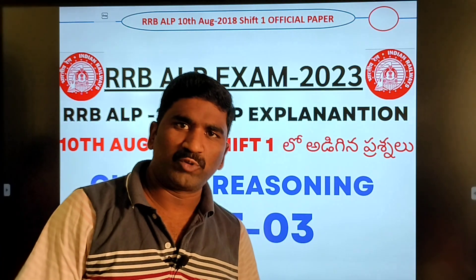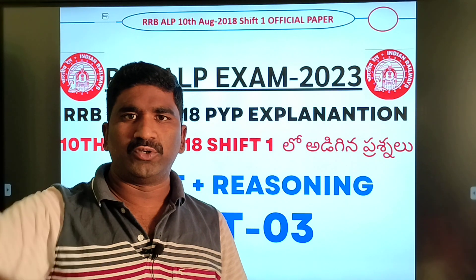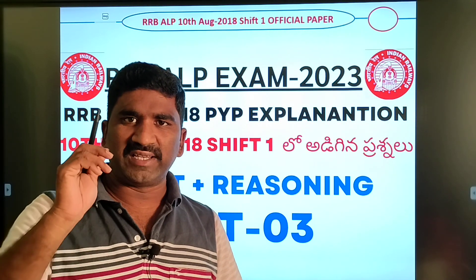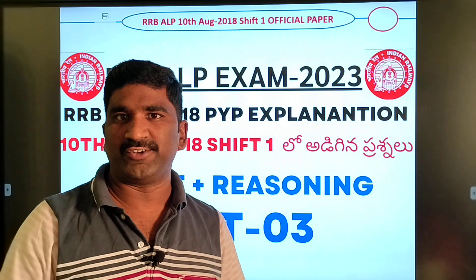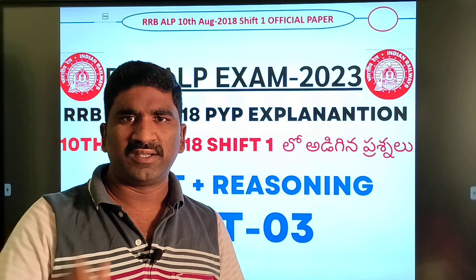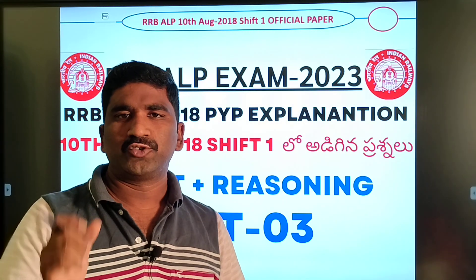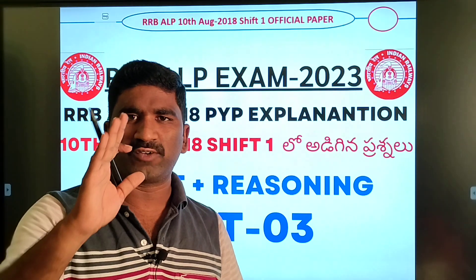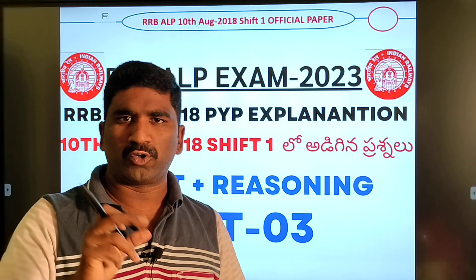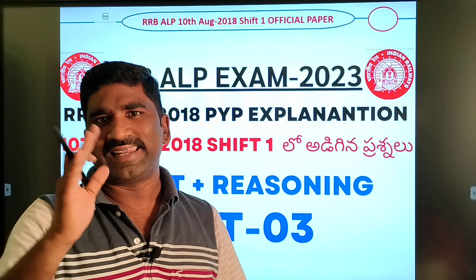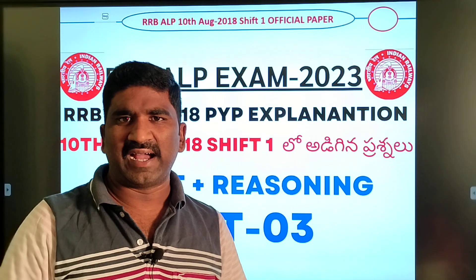Hi guys, good evening, welcome to the Aditya Job Creative channel. Today we will explain the quantitative aptitude of RRB ALP 2018 exam — 10 August 2018 — covering quantitative aptitude, reasoning, and general science questions. We will cover 20 questions in total.